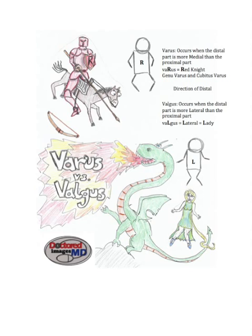For Valgus, the big L in Valgus is for lateral — or in this case in our image, it's for lady. You can remember the woman being saved by the knight on a horse, standing in the Valgus position. If you look at the stick figure, you can see both Genuvalgus and Cubitus Valgus. Genuvalgus is often referred to as knock-kneed. And that's all for Varus vs. Valgus.